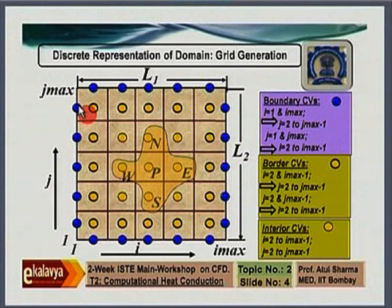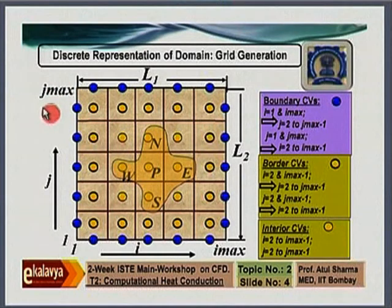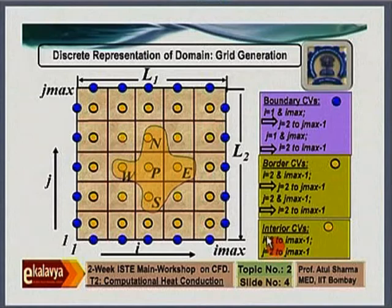The boundary control volume can be defined as a control volume whose volume is zero, because the points sit at the centroid of the control volume. At the boundary, there is no non-zero control volume — it lies at the face. So the boundary control volume has zero volume, and I am showing the running indices for interior, border, and boundary control volumes.